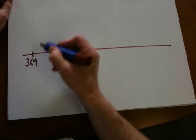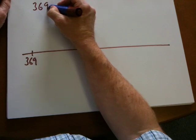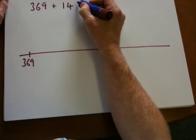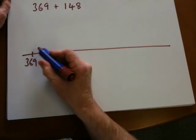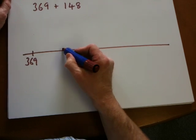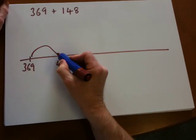369 to start with. The question, remember, is 369 add 148. But we could say, well, how far is it to the next whole 100? Well, that's 400, so that's 31.